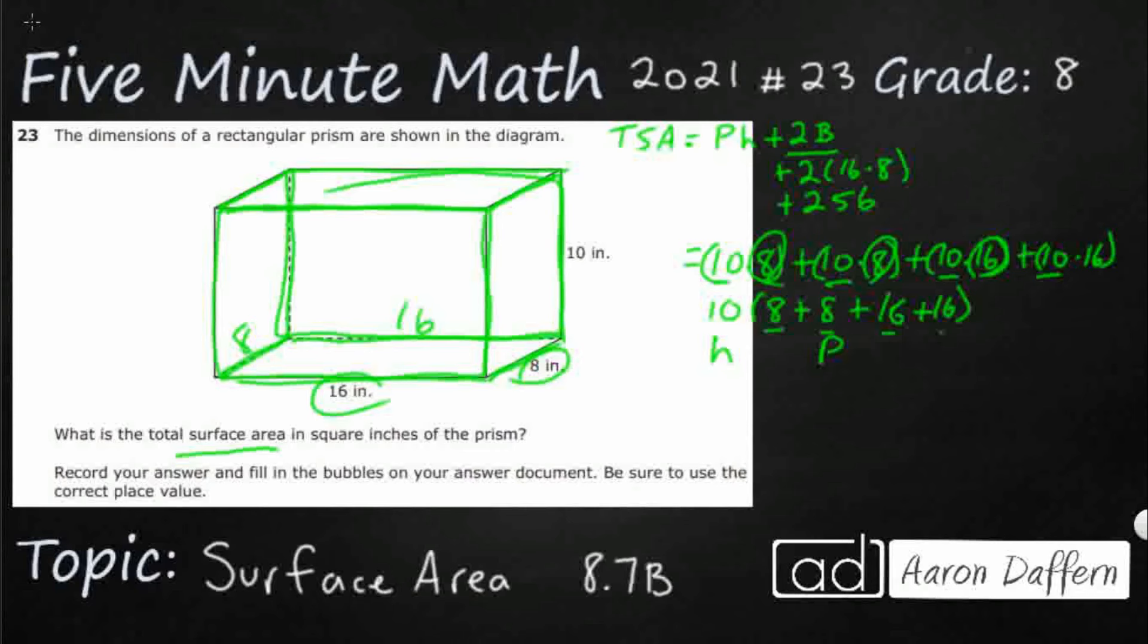So what is the perimeter? I've got 16 plus 16 plus 8 plus 8. That makes 48 times 10. That's easy, that's 480. So my lateral surface area, which is really what this is, the perimeter times the height.